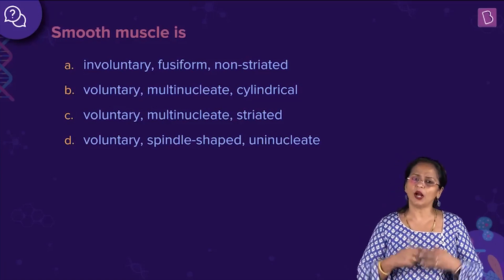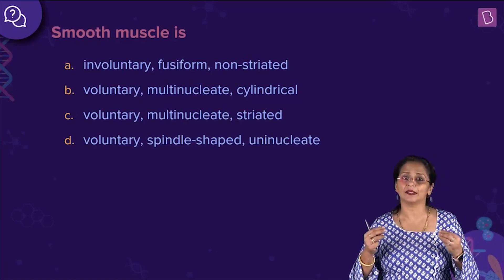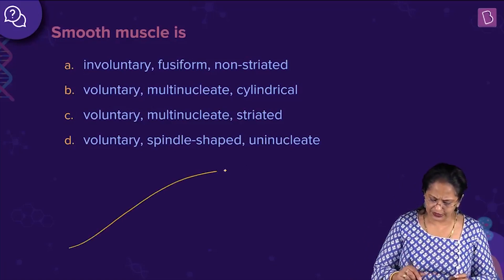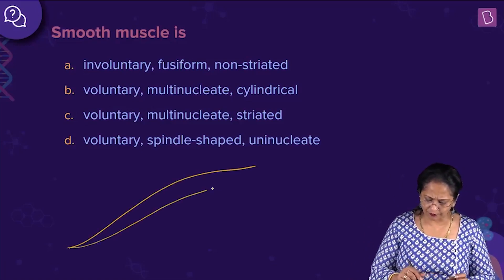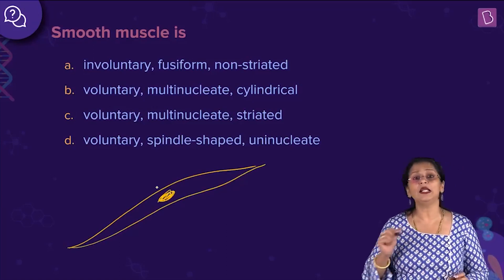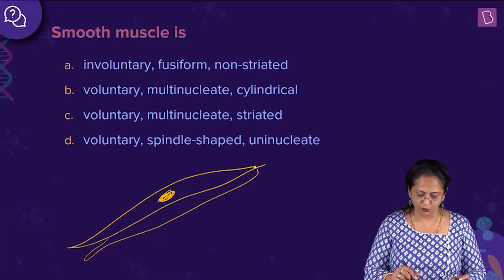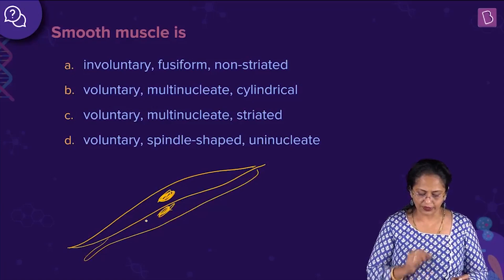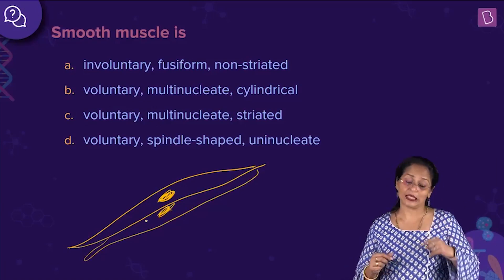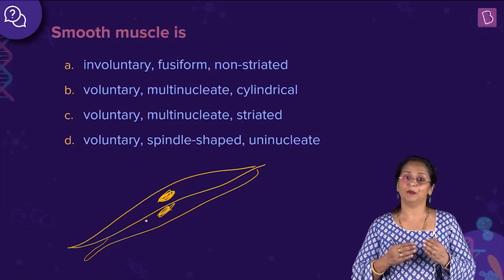How do smooth muscles look? They are fusiform — that means they have tapering ends. They are uninucleated, meaning they have just one nucleus. What is absent in smooth muscle, compared to striated muscles, are the striations — the stripes — which are alternate light and dark bands due to the distribution of proteins actin and myosin. Those stripes are not found in smooth muscles.